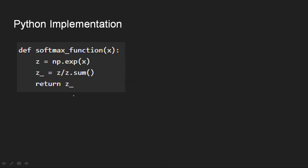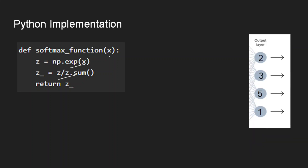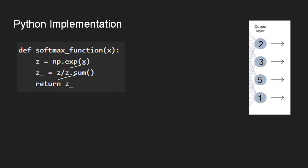Now let us look at the Python code implementation. What we are doing here: we calculate the exponential and then divide by the sum — that is the normalization. Note that x is actually a vector here, not a single value. Taking the example we have seen, x is the vector [2, 3, 5, 1]. When we calculate the exponential of these values we get the transformed values. Then we sum all of these, which is what appears in the denominator. After that, we divide each value by the sum to get the normalized outputs — all between 0 and 1 with sum equal to 1.